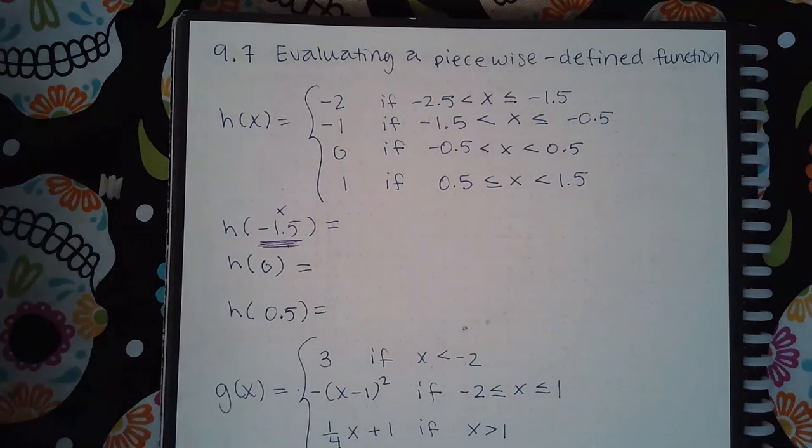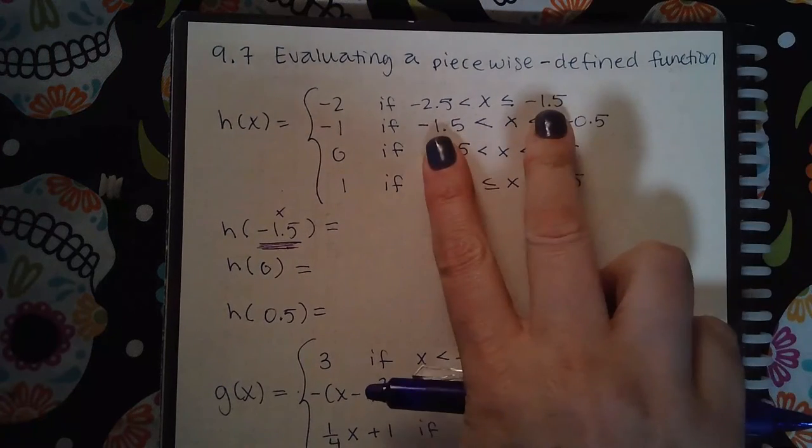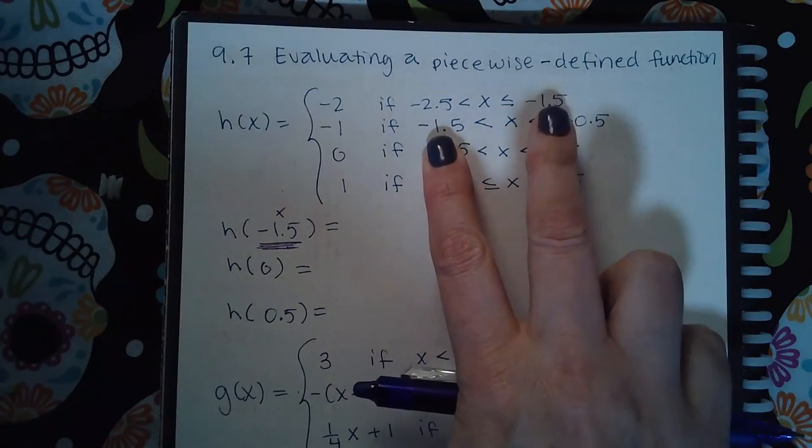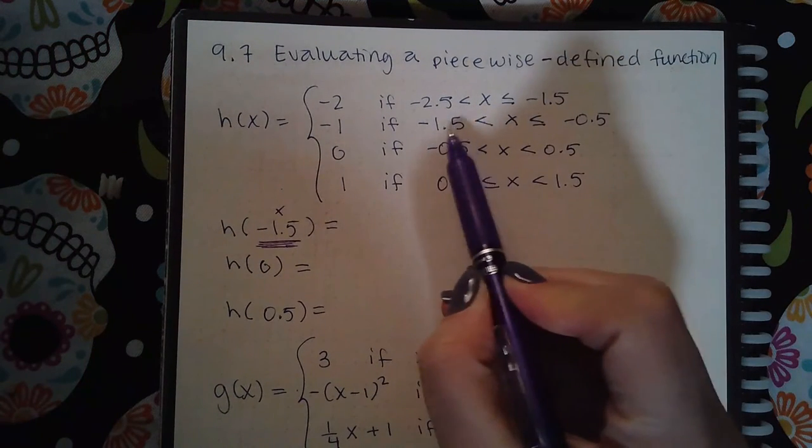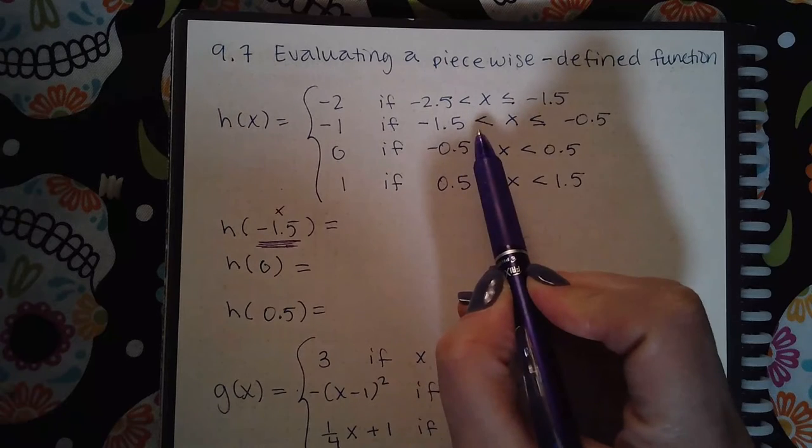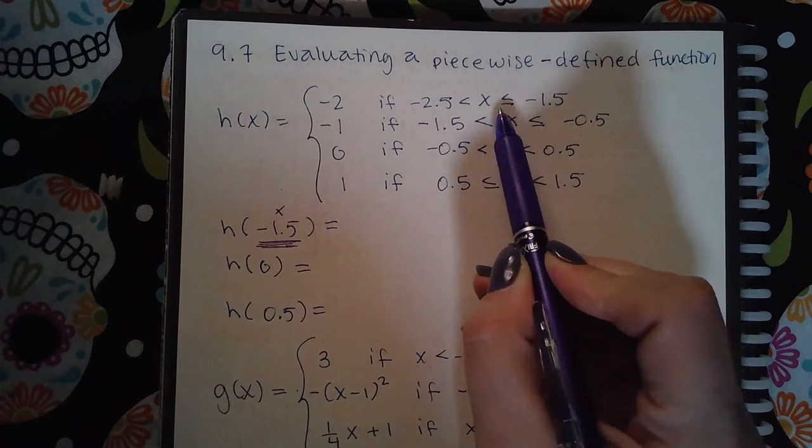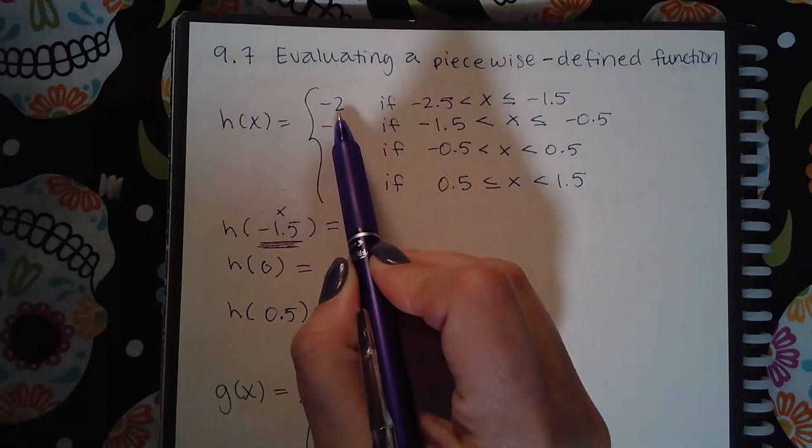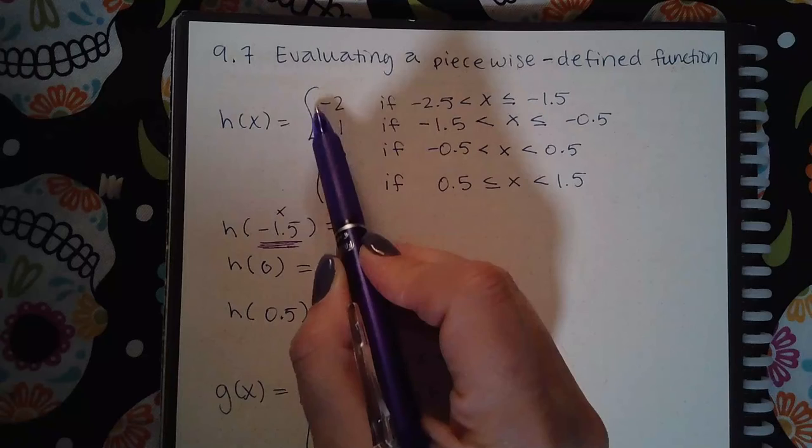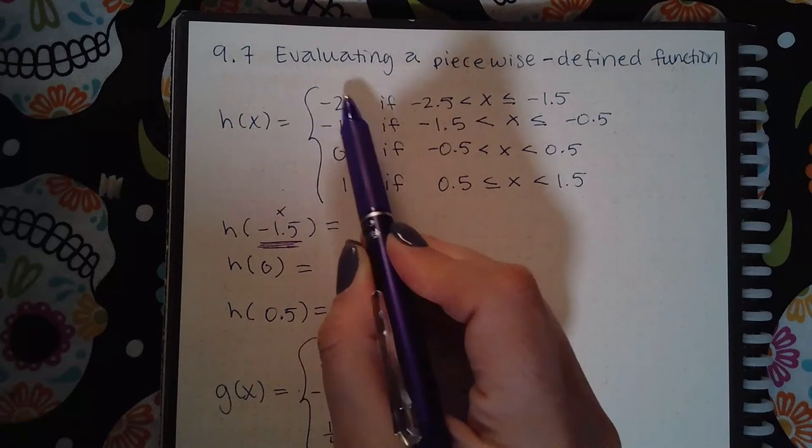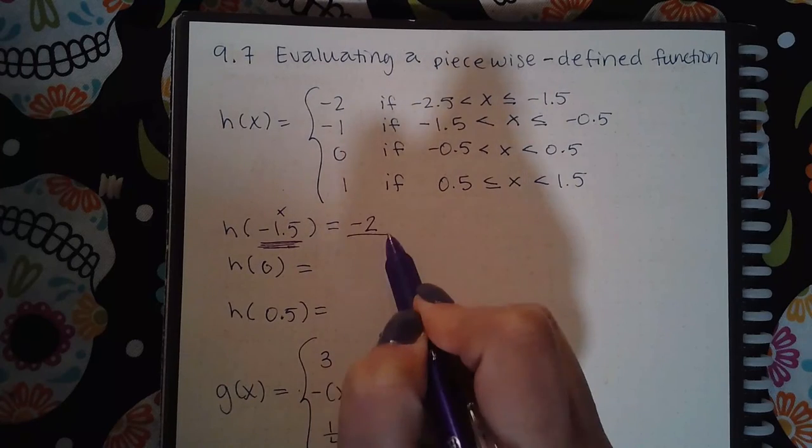So for negative 1.5, I see negative 1.5 both in the top and the second line, but this one does not equal negative 1.5, it does not include negative 1.5, whereas here it does equal negative 1.5 and includes it. So then this is the expression that I will use to find the y value. Now there's nothing to plug in, no x here for me to plug in negative 1.5, so the response is just simply negative 2.